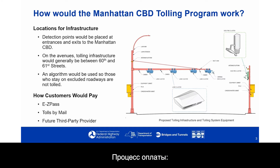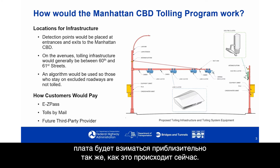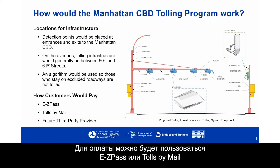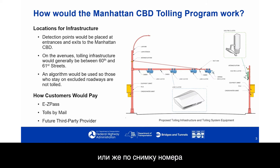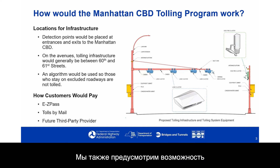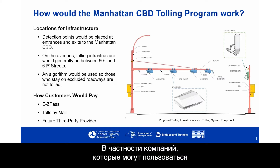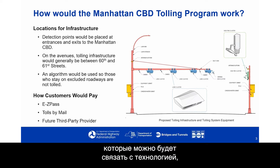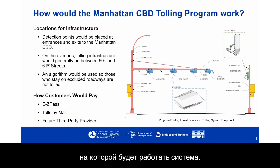With respect to how customers would pay, it would be very similar to what people experience today. They would be able to pay with E-ZPass or tolls by mail, where an image is taken of the license plate and a bill is mailed to the registered owner. There will also be capability for future third-party providers — companies that may use different types of technology that can link into this system.